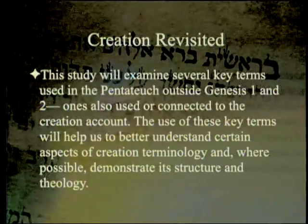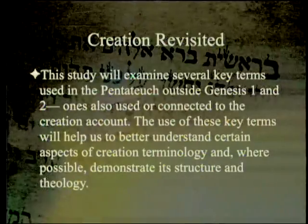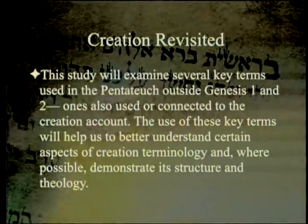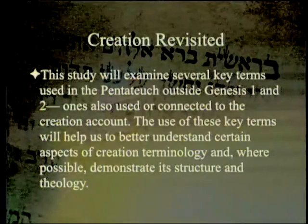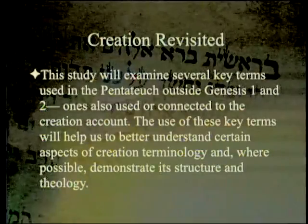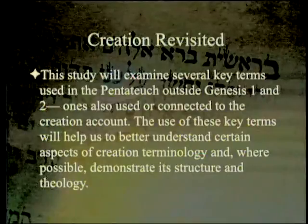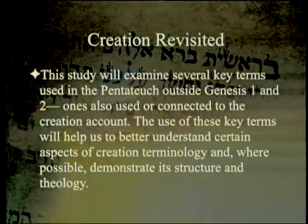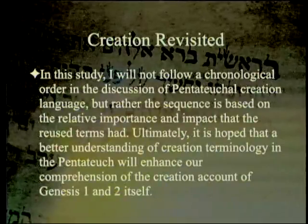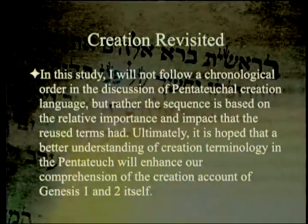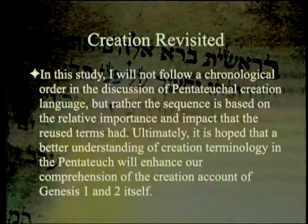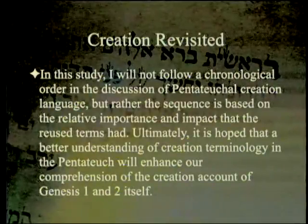The study will examine several key terms used in the Pentateuch outside of Genesis 1 and 2 that are also connected to the creation account. The use of these key terms will help us to better understand certain aspects of creation terminology and, where possible, demonstrate its structure and theology. The sequence is based on the relative importance and impact of the reused terms, with the hope of enhancing our comprehension of the creation account of Genesis 1 and 2 itself.